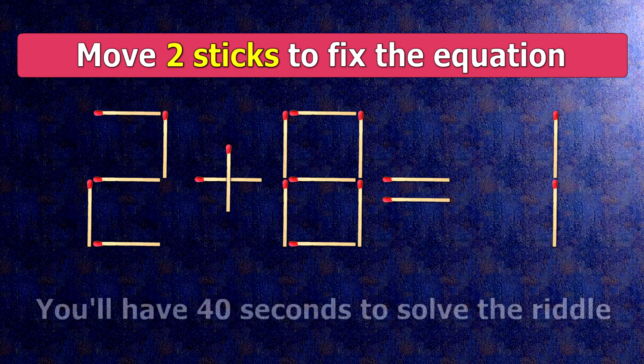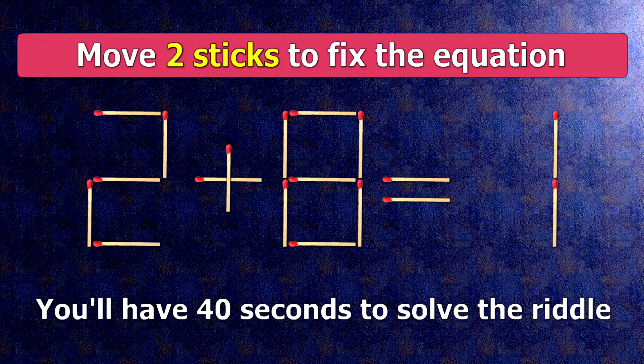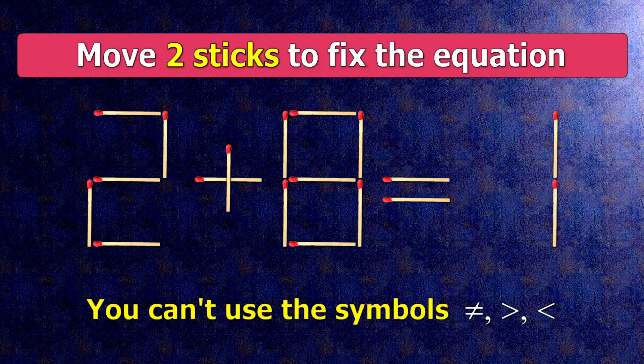We have the equality 2 plus 8 equals 1. Our equality is wrong. We need to move two matches to make our equality correct.